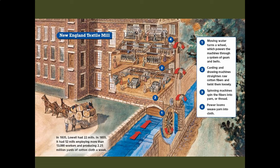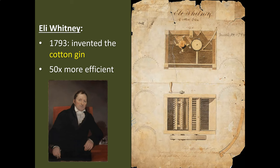These early textile mills are run by water power — you have a water wheel that transfers power via belts into the machines of the factory. It's going to give you pretty much unlimited power, but you have to build your factories near rivers. That's the one downside.